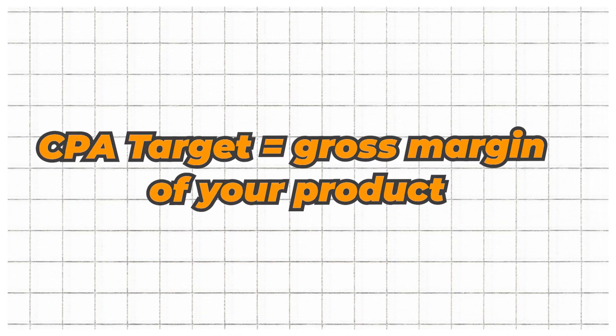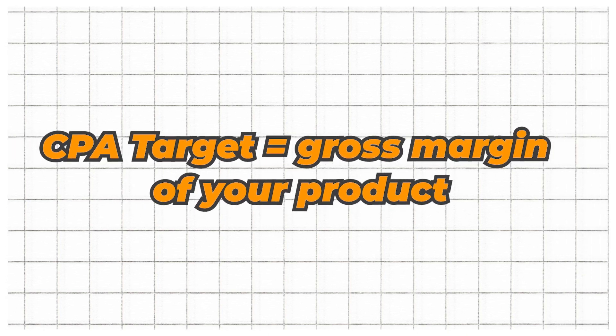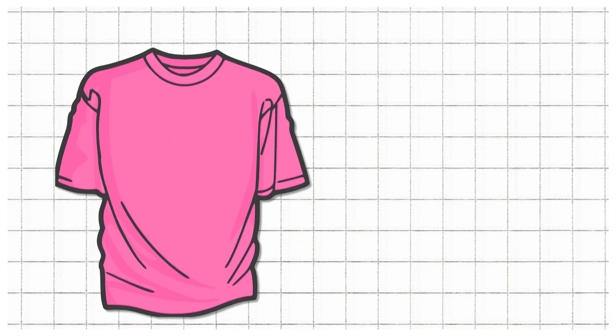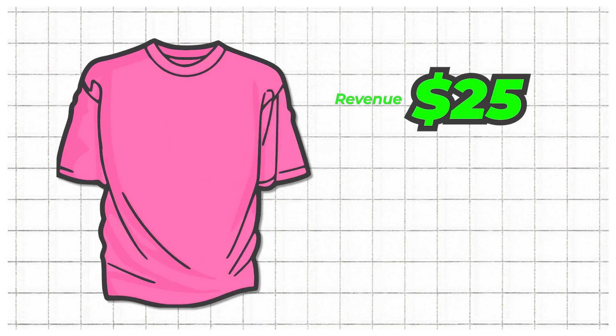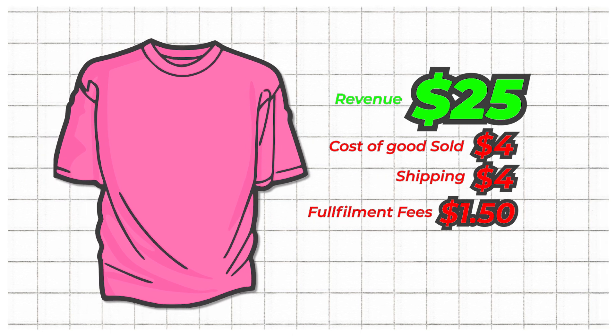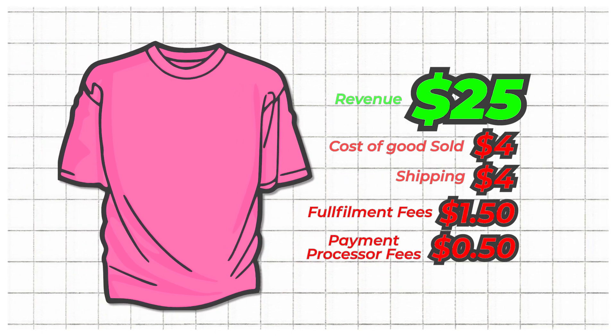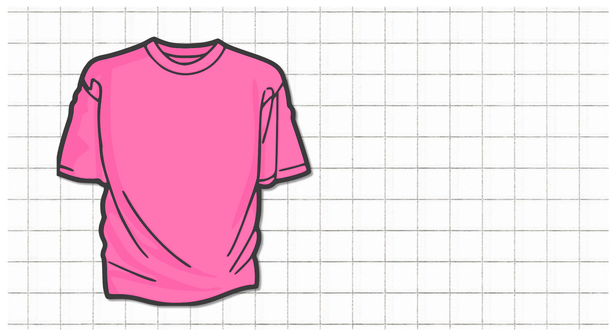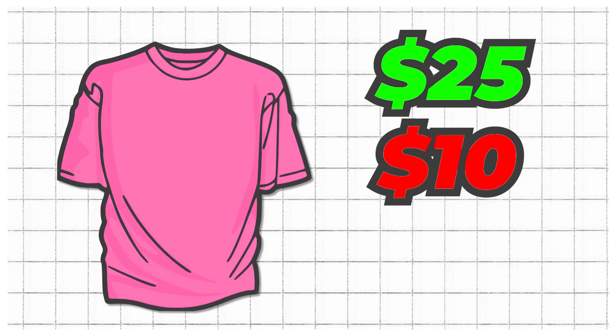Our CPA target would actually be our gross margin of our product. For example, gross margin could be our revenue minus our costs — so that could be our cost of goods sold, our shipping, our fulfillment fees, our payment processor fees. Using our $25 shirt, we could say it'd be $25 minus $4 for cost of goods sold, $4 for shipping, $1.50 for fulfillment fees, and another $0.50 for payment processor fees. That adds up to $10 of costs, so that would be $25 minus $10, which gives us $15. What we're aiming for is a CPA that is at or below our CPA target, so that at worst, we're breaking even.